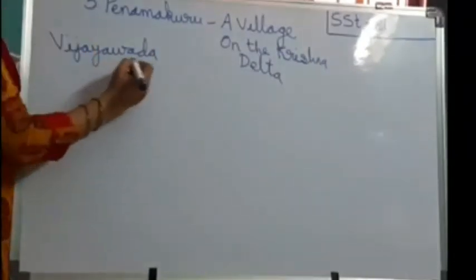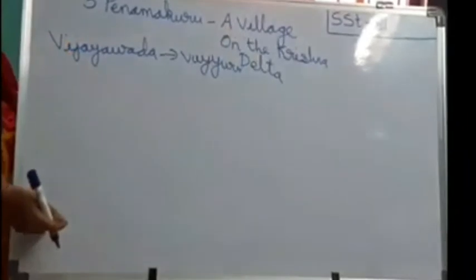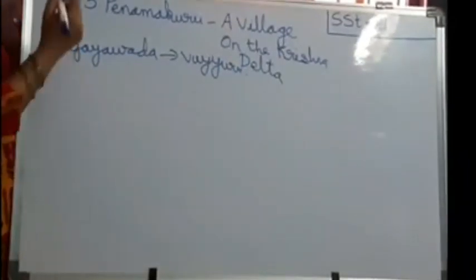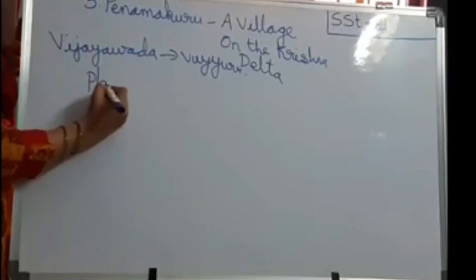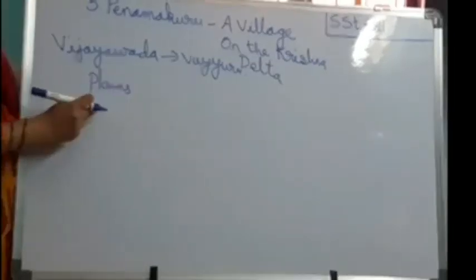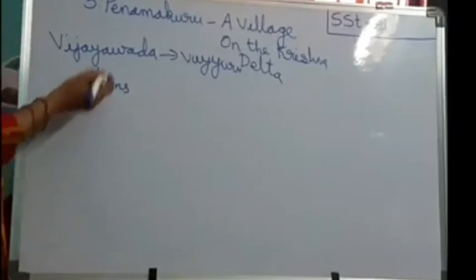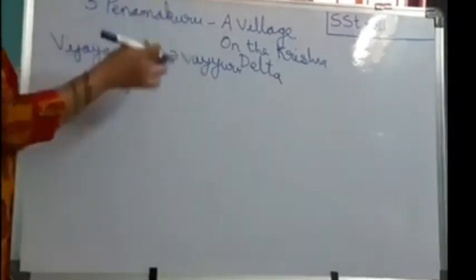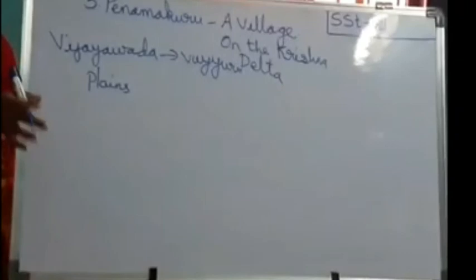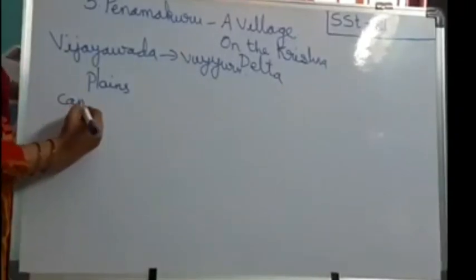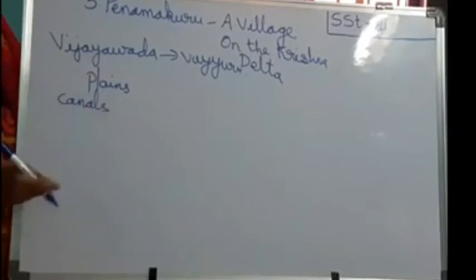From Vijayawada they reached Uyuru town. When they reached, they observed that the terrain — the land form — is completely plain. No hills, it is completely plain. And they crossed a number of canals.